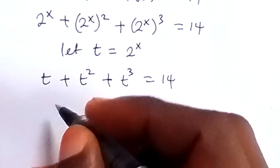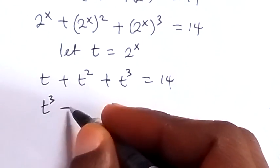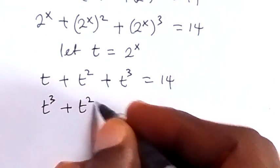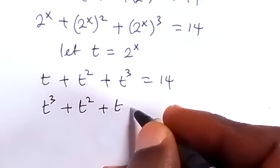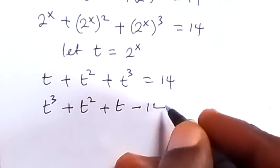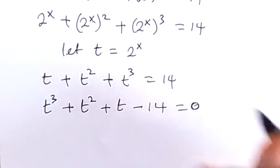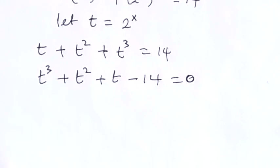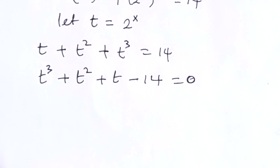We can use this to form a cubic equation by taking everything to one side. When we rearrange, we have t raised to power 3 plus t raised to power 2 plus t minus 14 equals 0. Now from this cubic equation, we must find a solution.